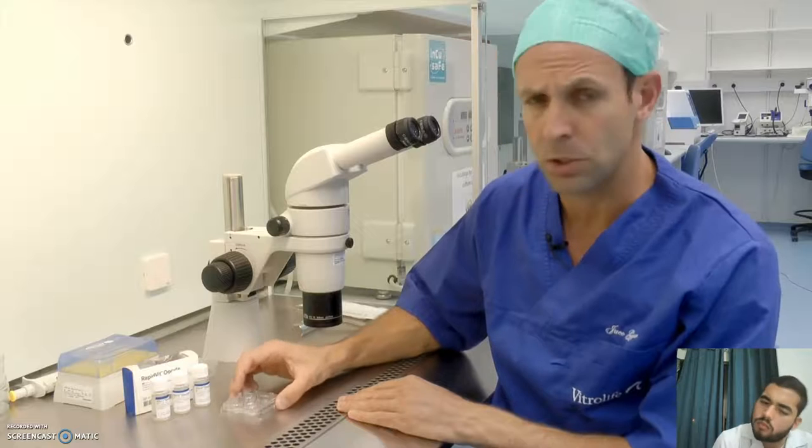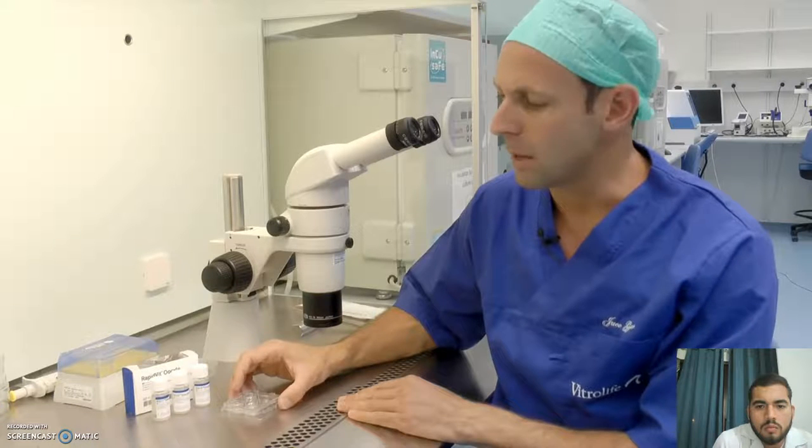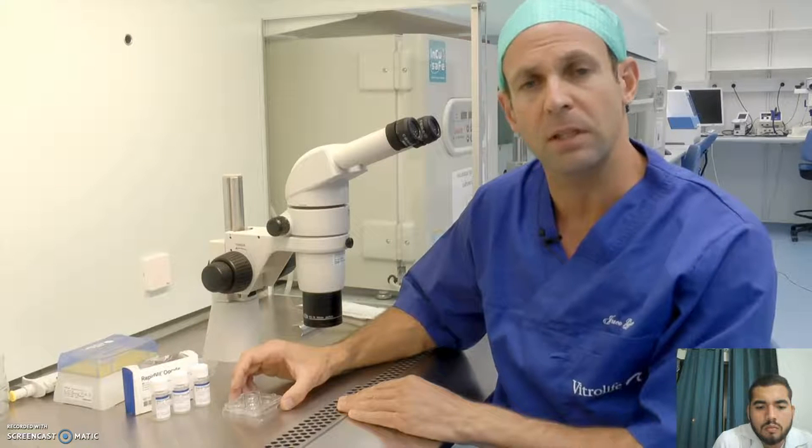The vitrification procedure is performed at 37 degrees Celsius and ambient atmosphere. Aliquot 1 ml of each of the vitrification solutions into a multi-well dish. It is important to maintain this 1 ml volume for each of the solutions. First, it may change the osmolality of the solutions if you use less than 1 ml. Secondly, the temperature of the solutions can be maintained much better if you use 1 ml. If the temperature fluctuates, it will affect the permeability of the cryoprotectants, and that can ultimately affect the survivability of the oocytes.